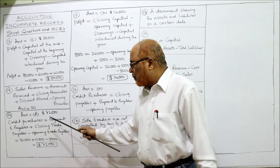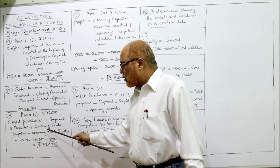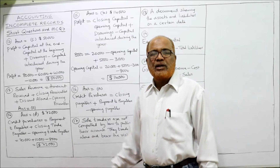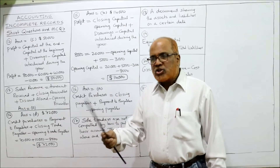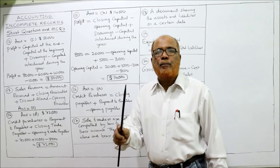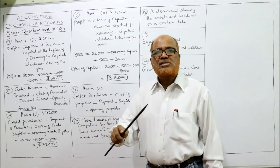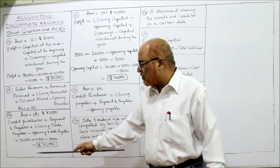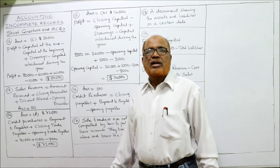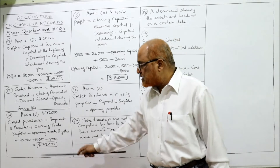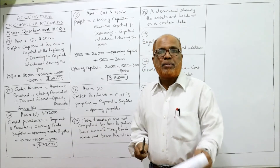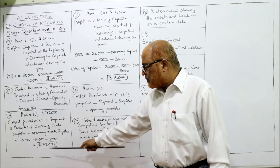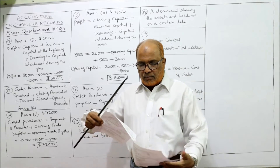Credit purchases = payment made to payables + closing trade payables − opening trade payables. Payment made to payables: $70,000; closing trade payables: $10,000; opening trade payables: $8,000. So: 70,000 + 10,000 − 8,000 = $72,000. That is the answer. Problem 14 is completed.